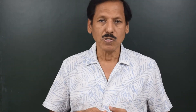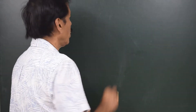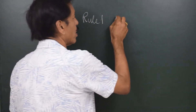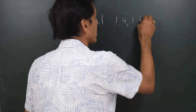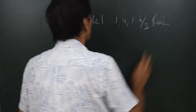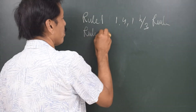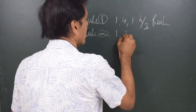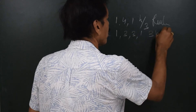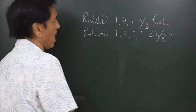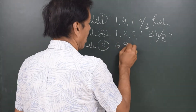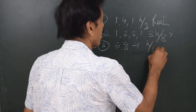We will understand Simpson's rules by doing relevant numericals. Rule number one is also called the 1-4-1, h/3 rule. Rule number two is called the 1-3-3-1, 3h/8 rule. And rule number three is called the 5-8-minus-1, h/12 rule.